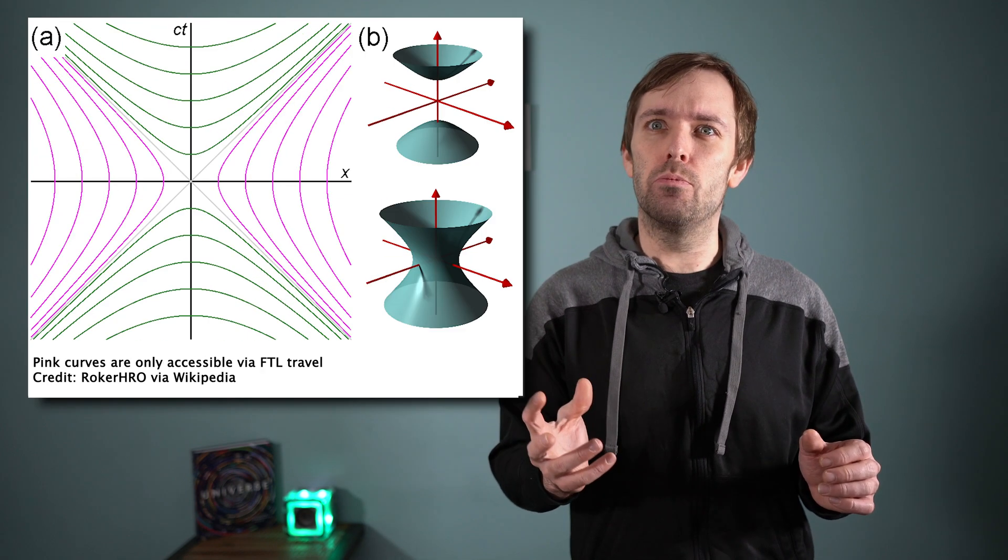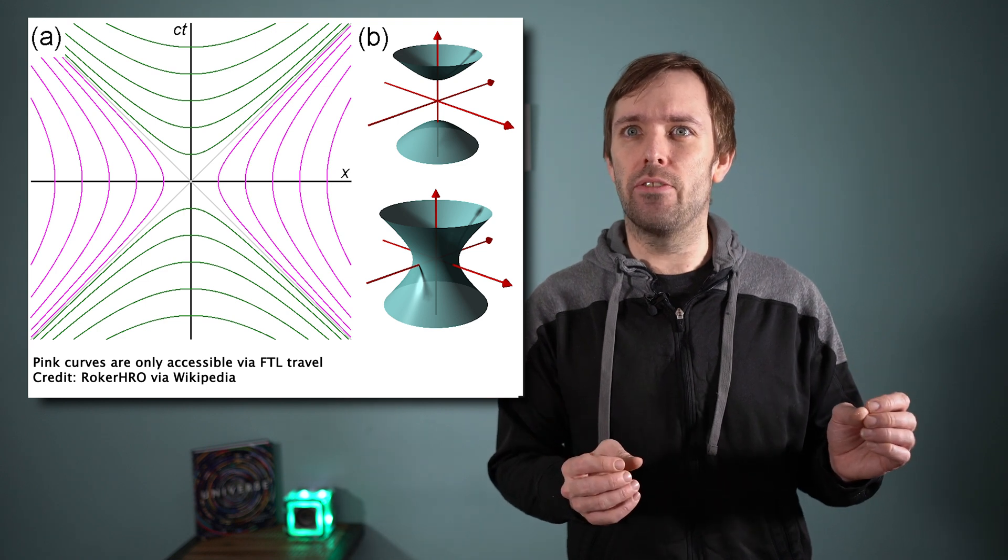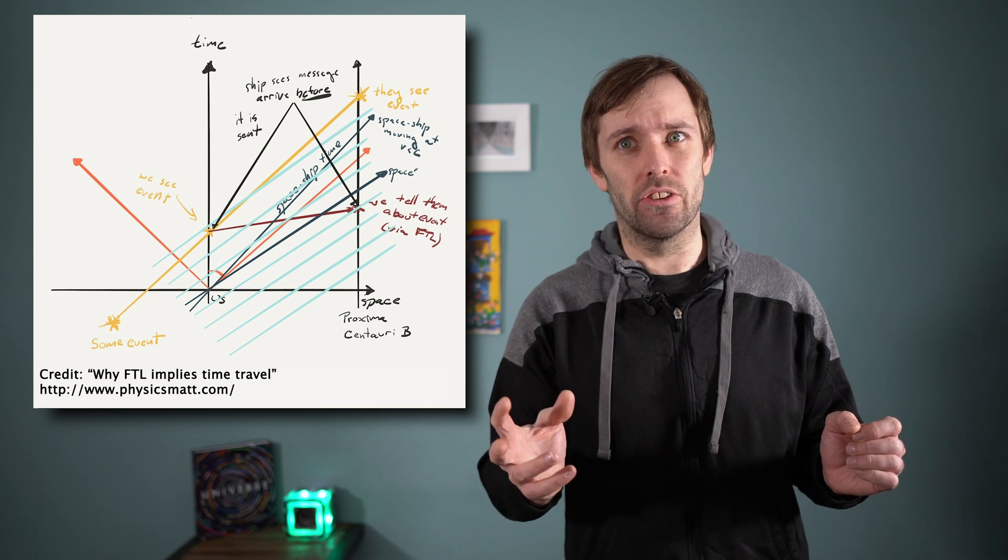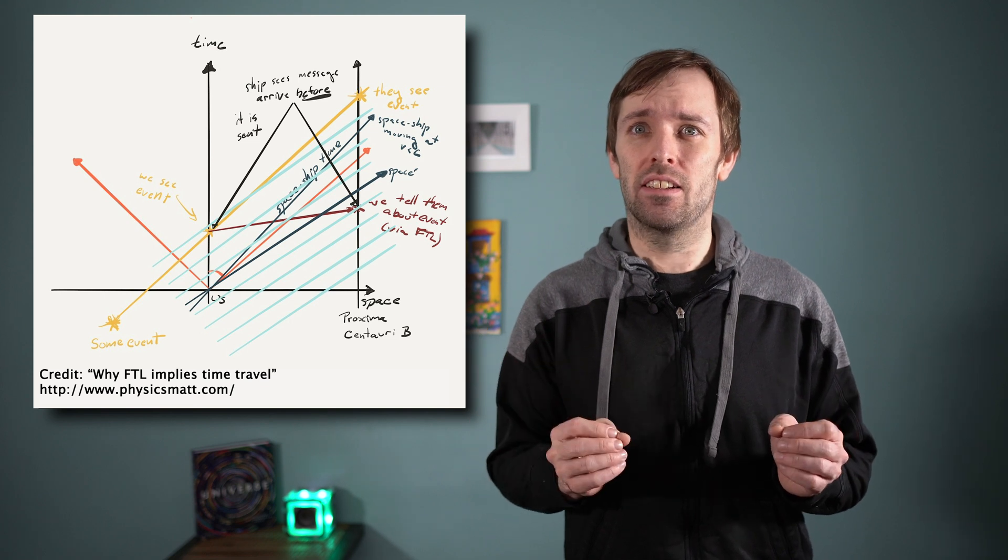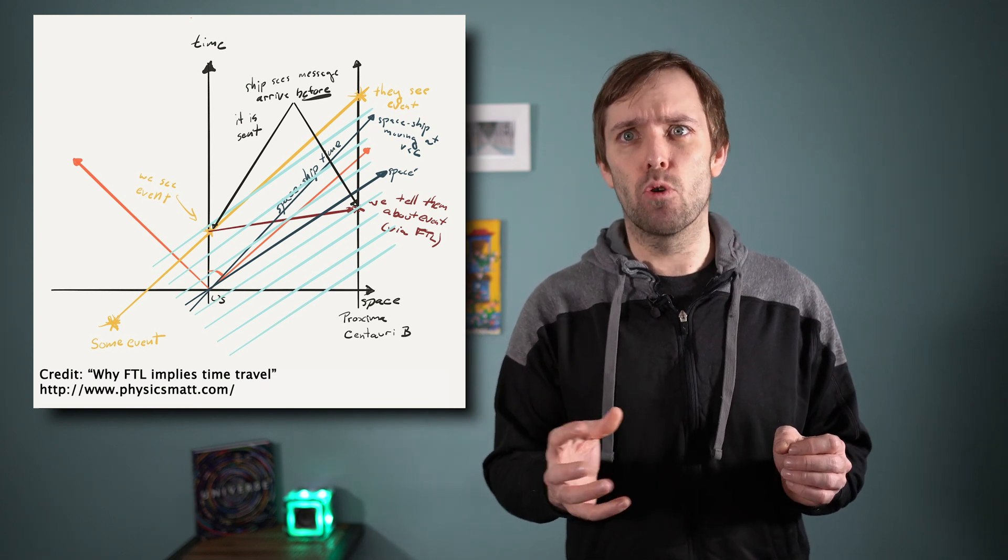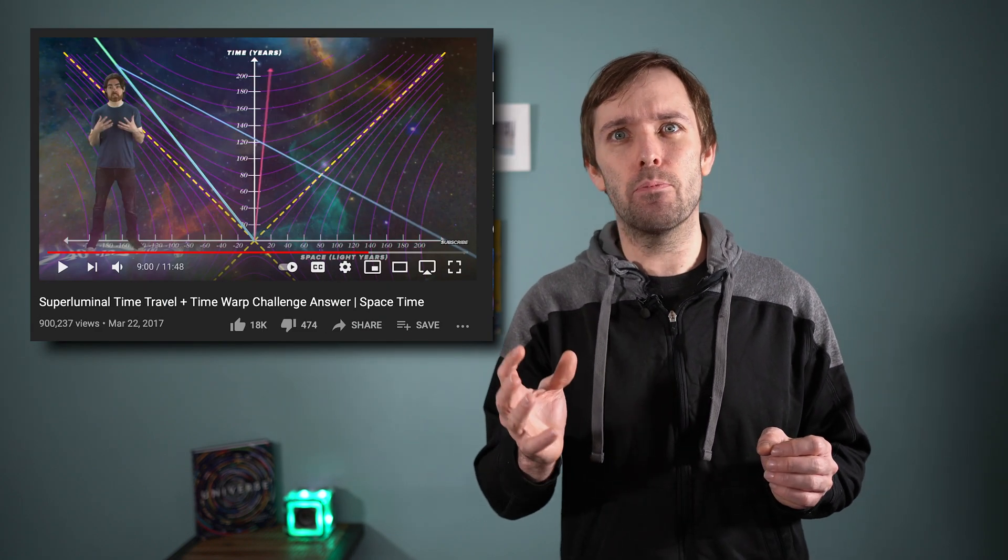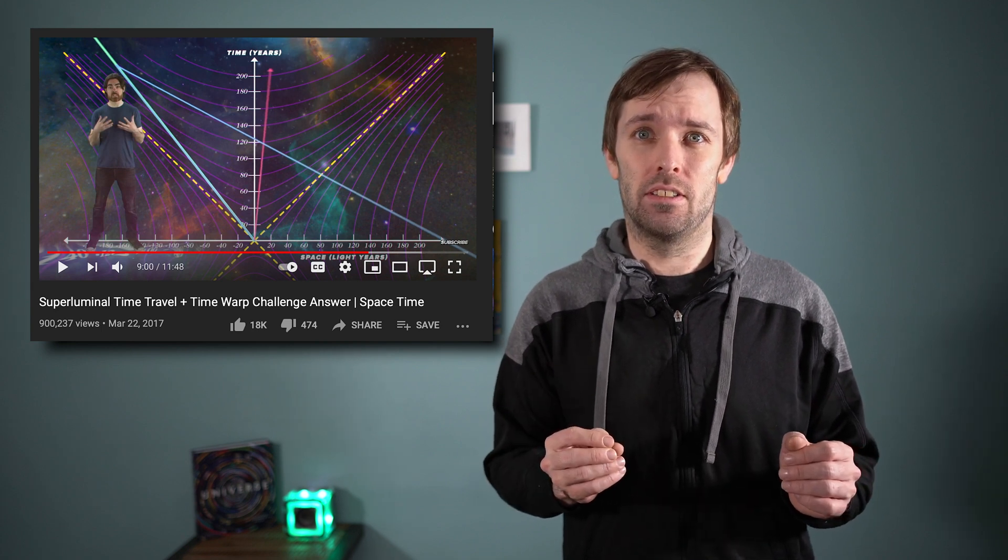Faster-than-light travel would allow one to move to a different causality curve. Instead of just disagreeing on whether events are simultaneous or not, a faster-than-light traveler would disagree with others on cause and effect. And again, both would be correct. If you leverage these time-warping geometries, as explained in this PBS spacetime video, you could literally travel back in time and visit yourself before you left. And this applies to any mechanism of faster-than-light travel, be it an Alcubierre drive or a wormhole connecting disparate regions of space.